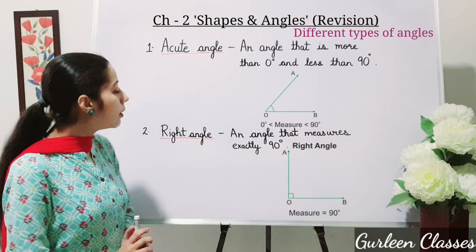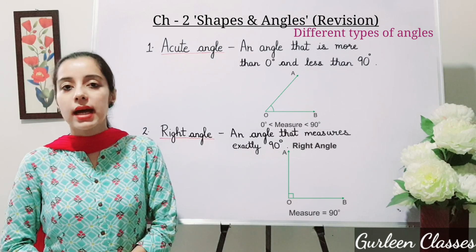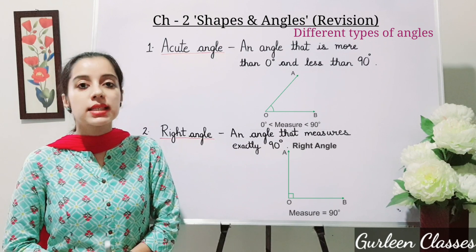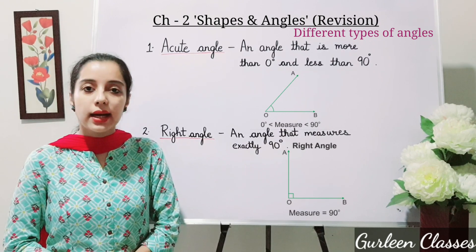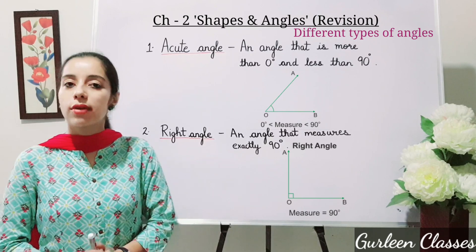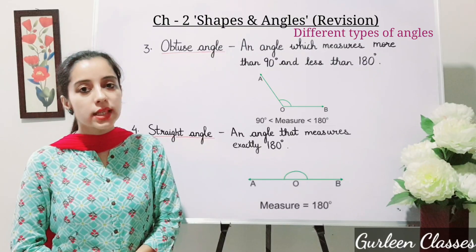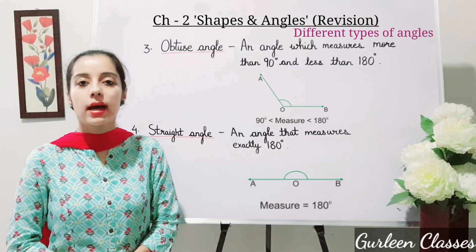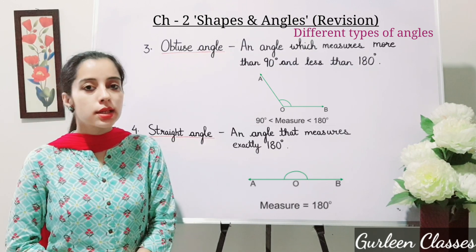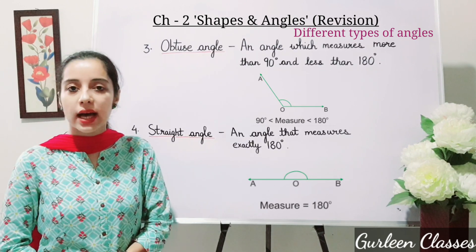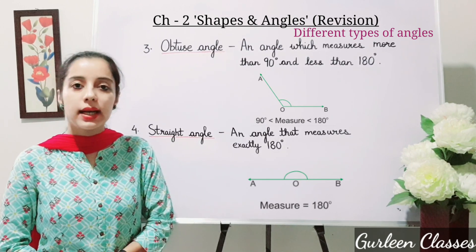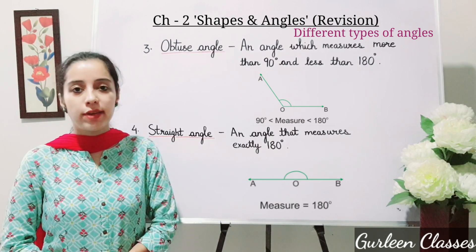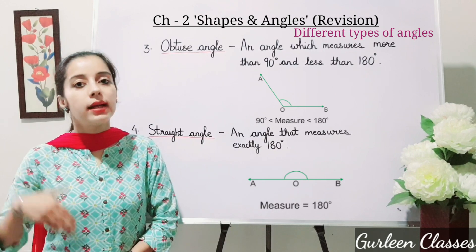Number two: Right angle. An angle that measures exactly 90 degrees. When an angle is exactly 90 degrees, it is a right angle. This is the figure of a right angle. Number three: Obtuse angle. An angle which measures more than 90 degrees and less than 180 degrees. This is an example of an obtuse angle. For example, 165 degrees — it is more than 90 degrees and less than 180 degrees.